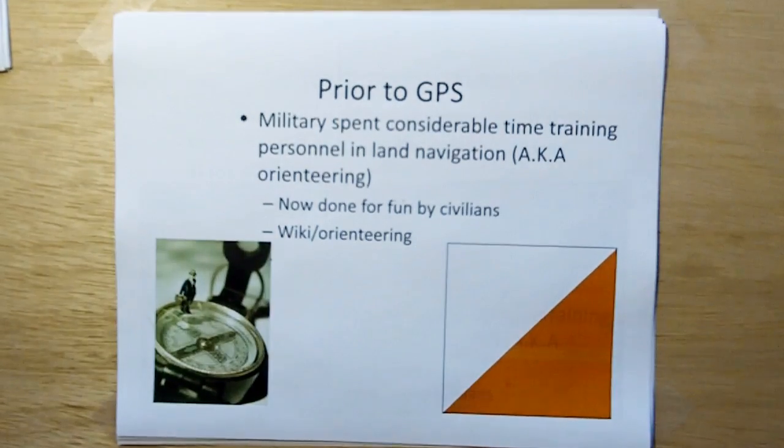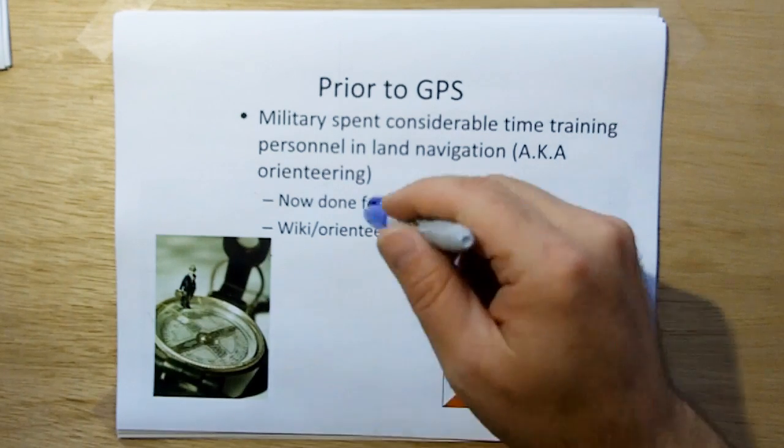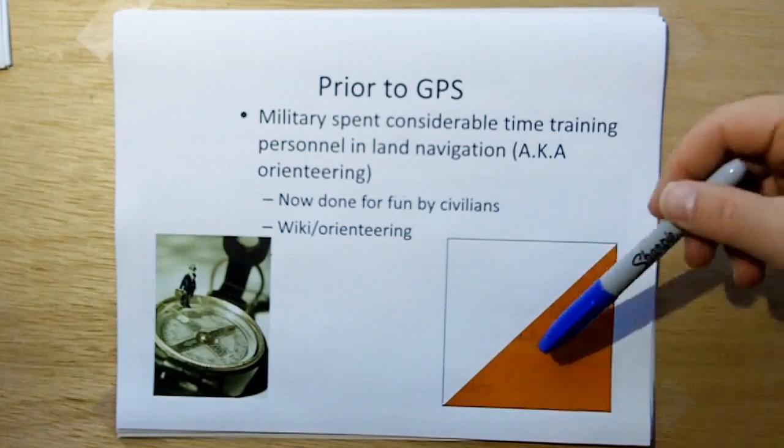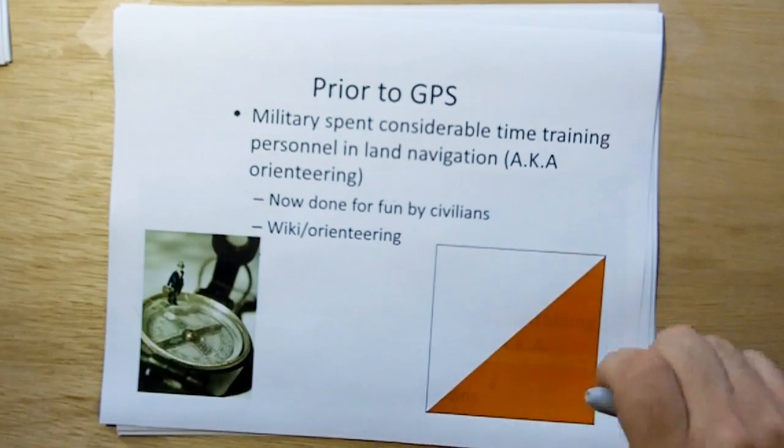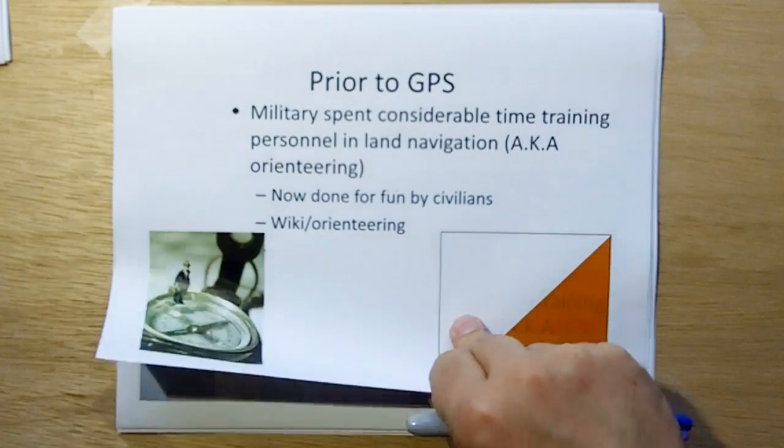Prior to the GPS, the military spent considerable time training personnel in land navigation. I know, I went through the courses. It's also called orienteering. It's now done by fund for civilians, and you can go to wiki orienteering. By the way, I don't know why they need a flag, but that's the international flag for orienteering.